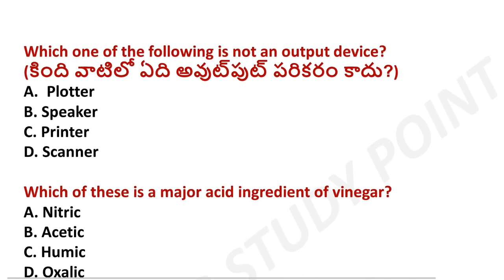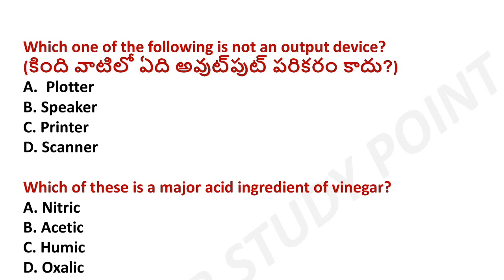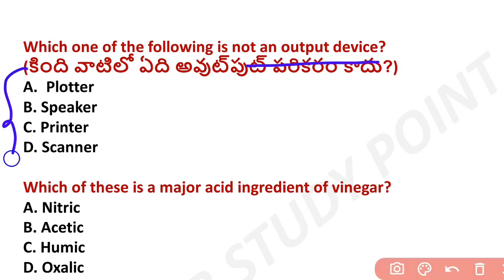Next question: which of the following is not an output device? Computer-related questions include bits, bytes, input-output devices, and full forms. A speaker, plotter, and printer are output devices. A scanner is not an output device — it is an input device.